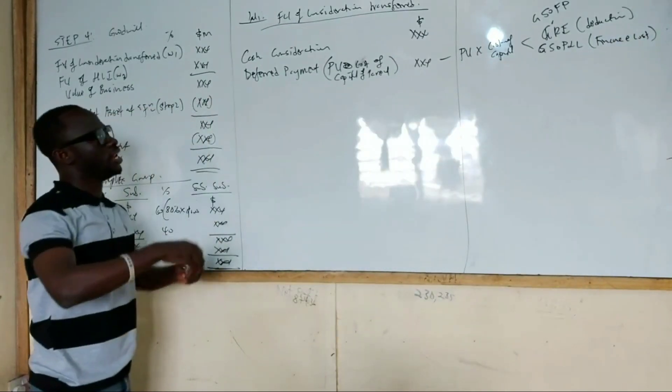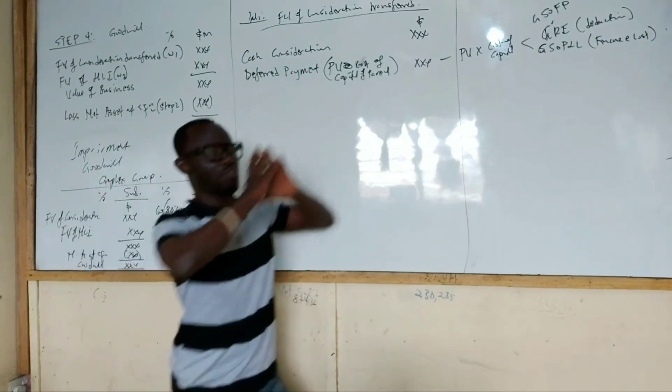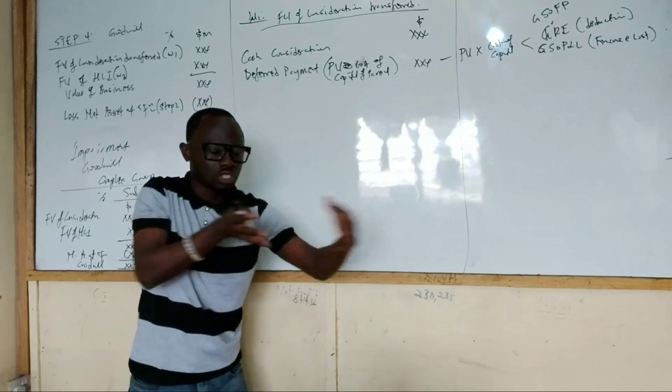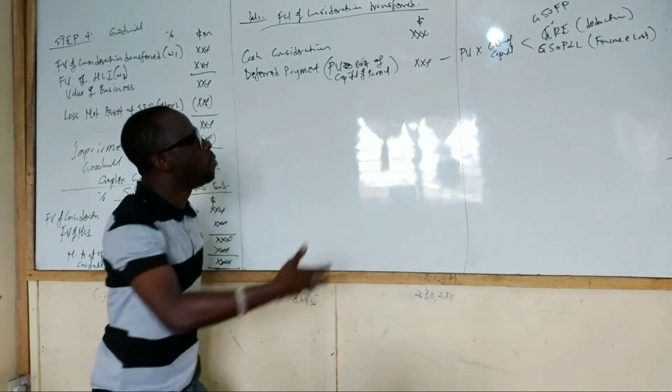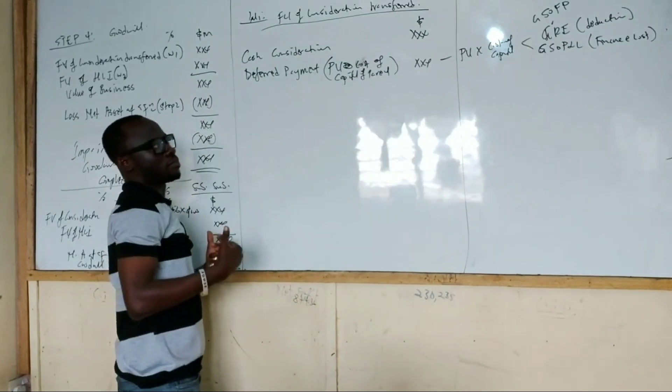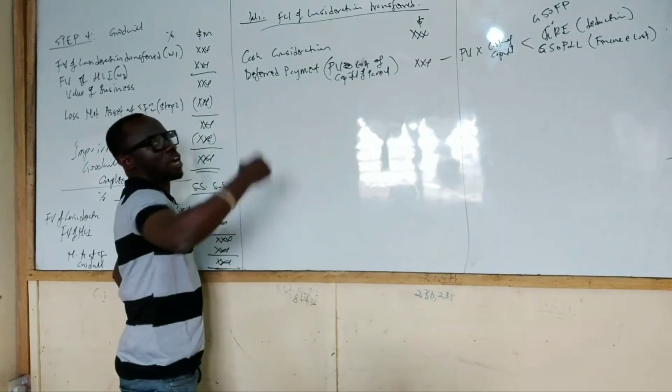So let me take that again. The entity may make deferred payments. What it means is that the entity will be making some payments in the future as a result of the acquisition. Now, because it's in the future, we must bring it into today's terms. And we will use the cost of capital of the parent.